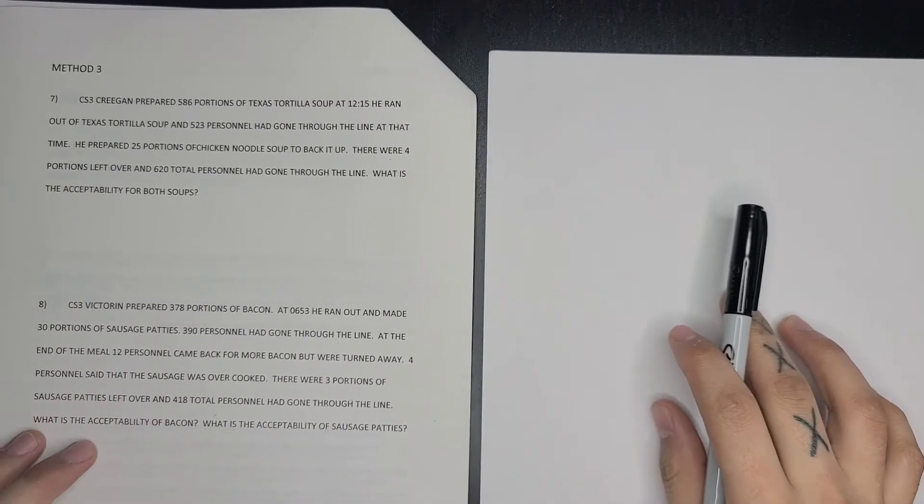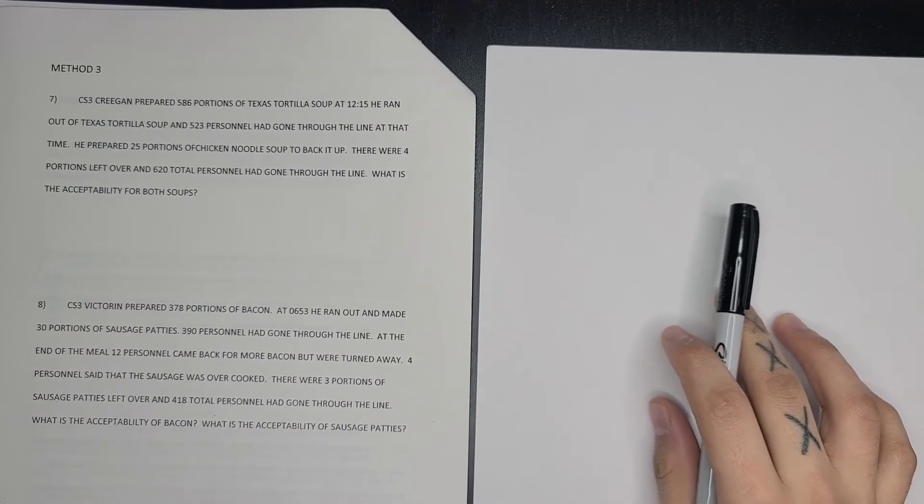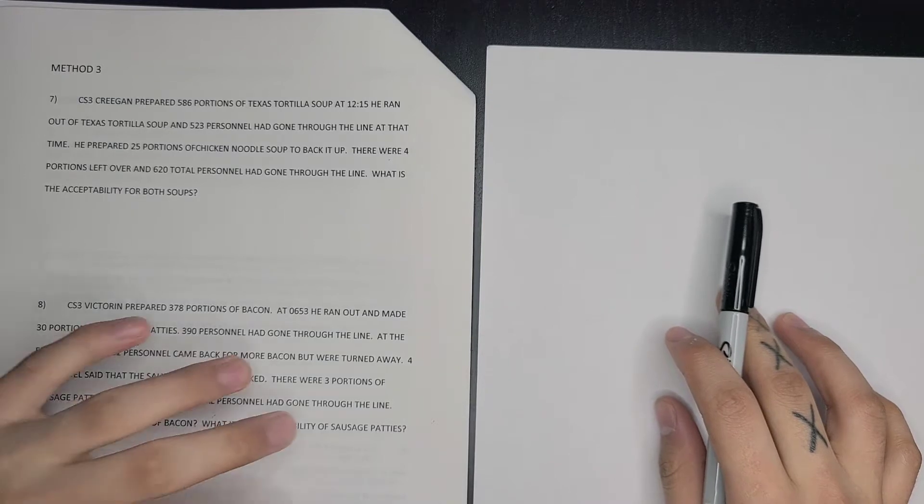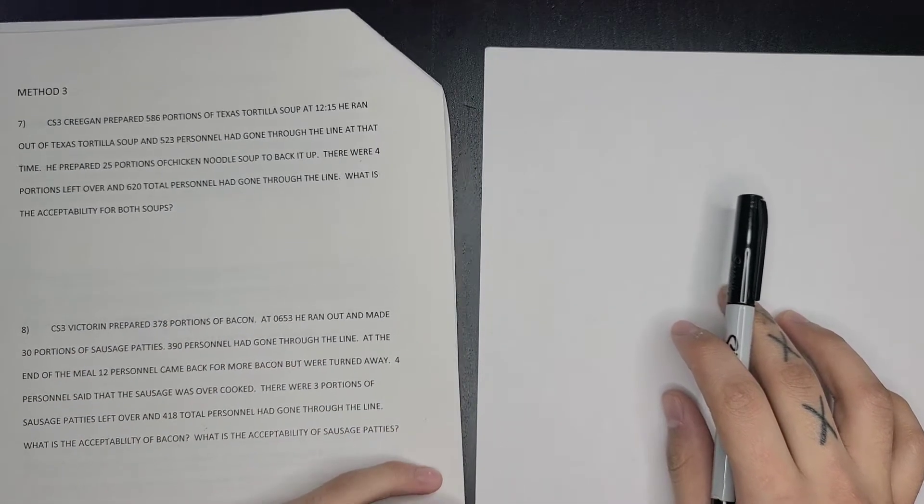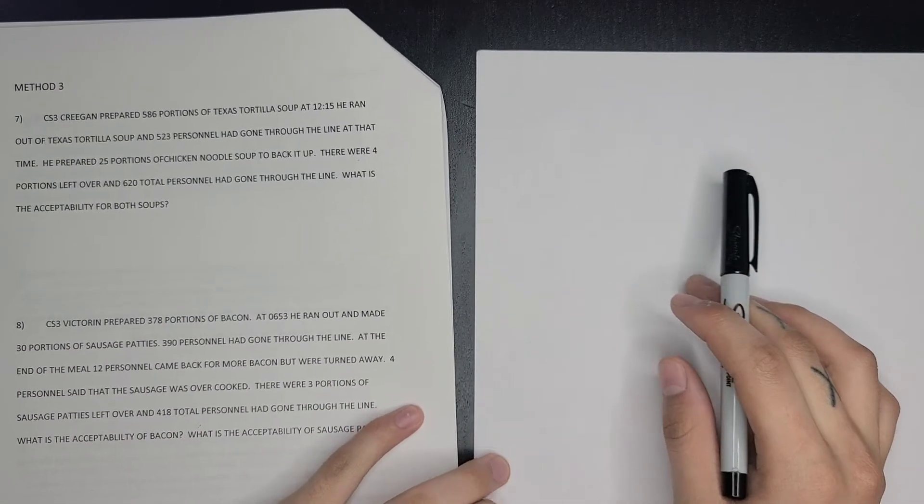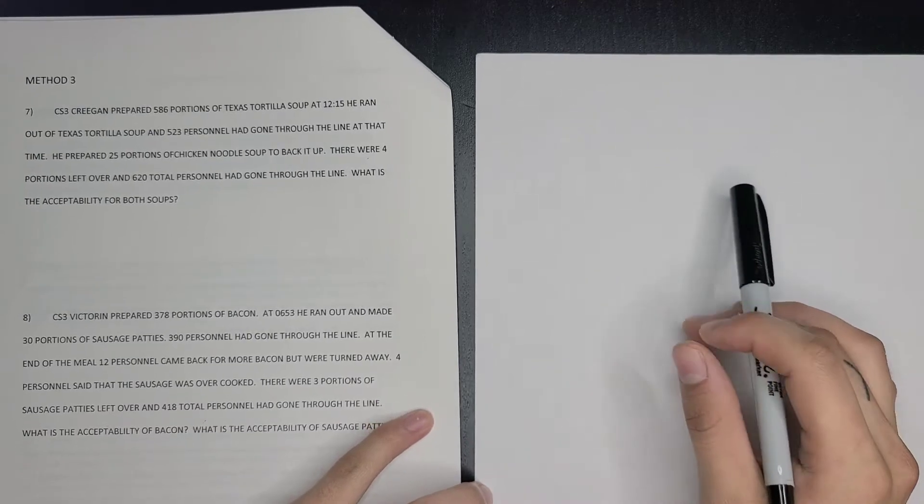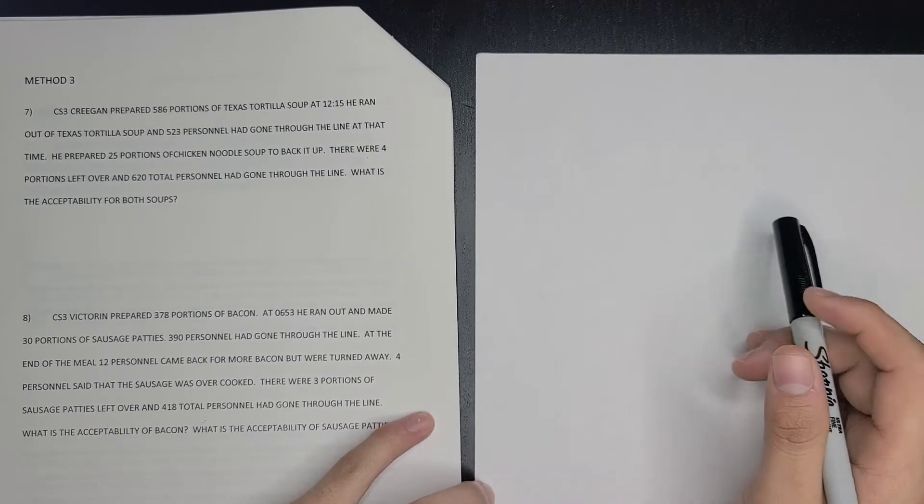Hey everyone, today we're going to be going over your third method of your acceptability problems. You use this third method when the menu item prepared runs out and is substituted with a different food item.